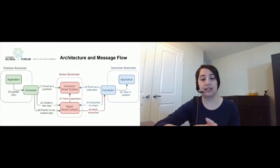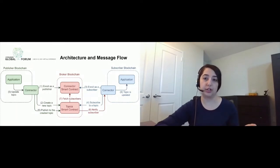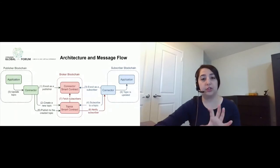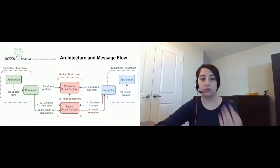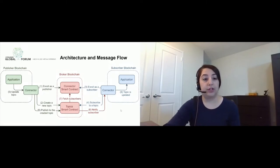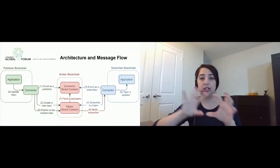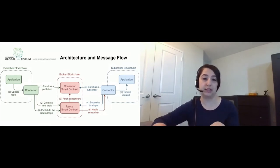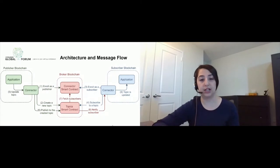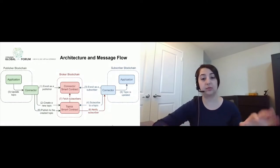Imagine a source and a destination network that want to work together. We call the source network the publisher and the destination the subscriber. For each of these blockchains to be able to interact with our platform, they need to implement a connector smart contract. When they do that, they can use the connector to enroll in the system. The first step would be for the publisher to create a new topic. When they create a new topic, all the other blockchain networks can come in as subscribers and subscribe to that specific topic. From that point on, every time the publisher updates the topic, all of the subscribers will be notified of that change. That topic could be just information about an asset, or when something about an asset changes we can update the topic.